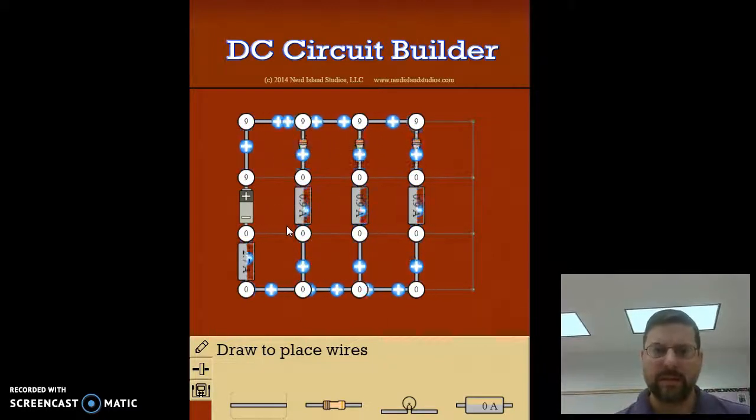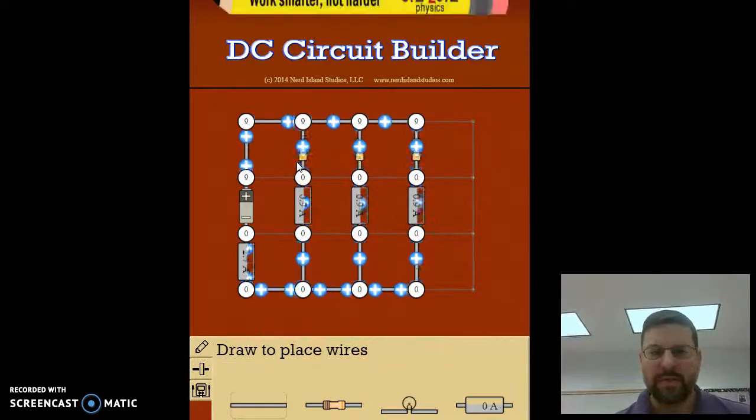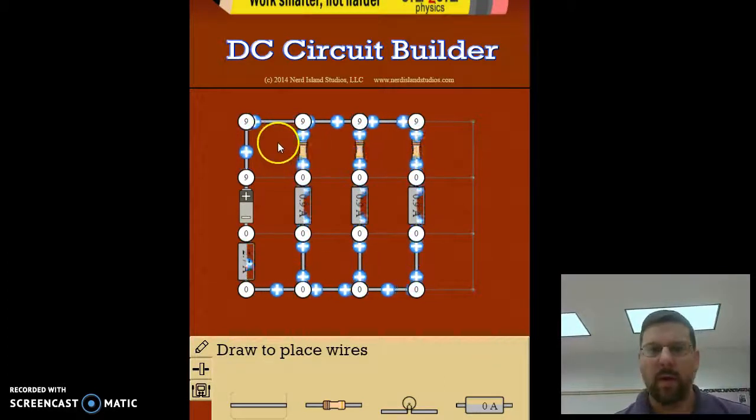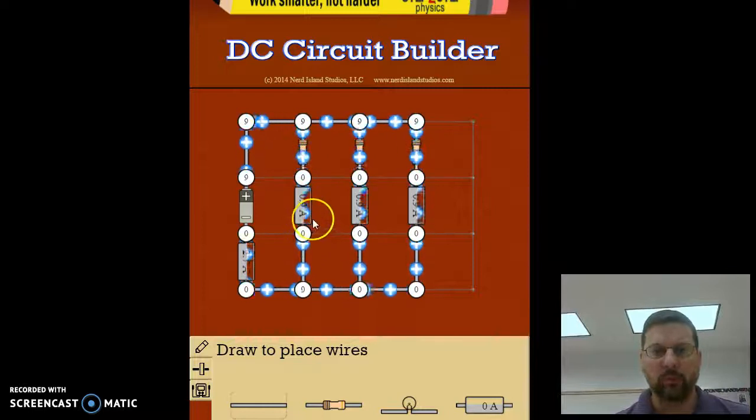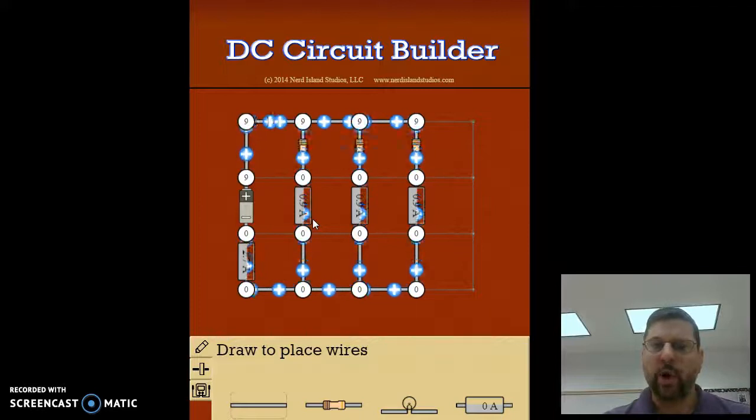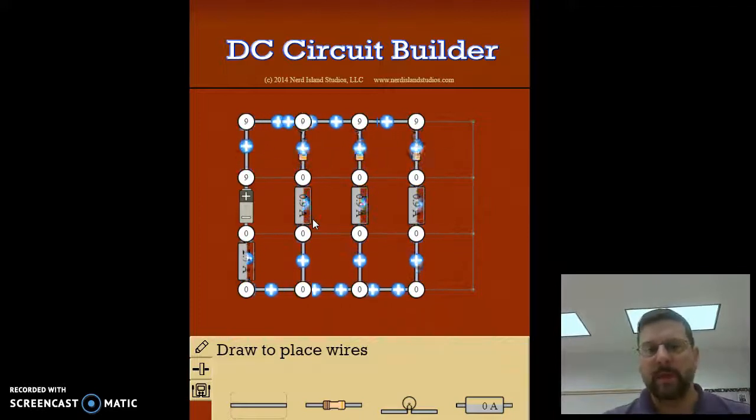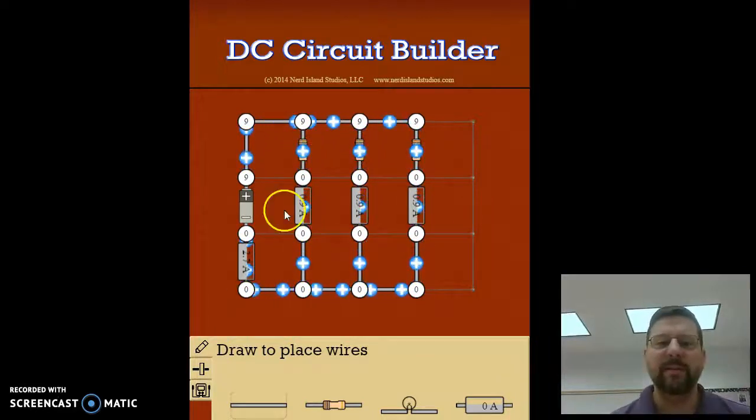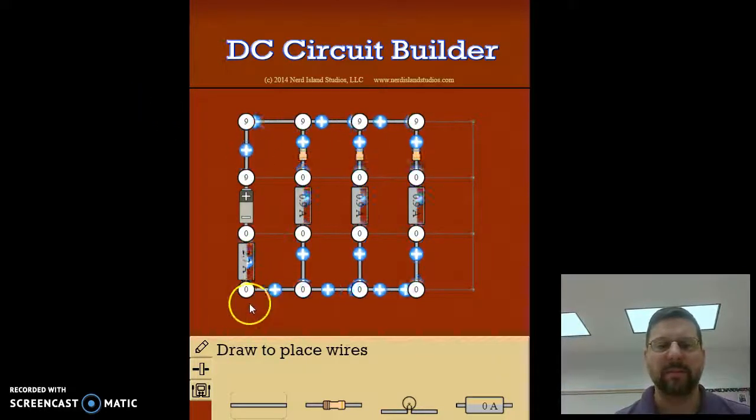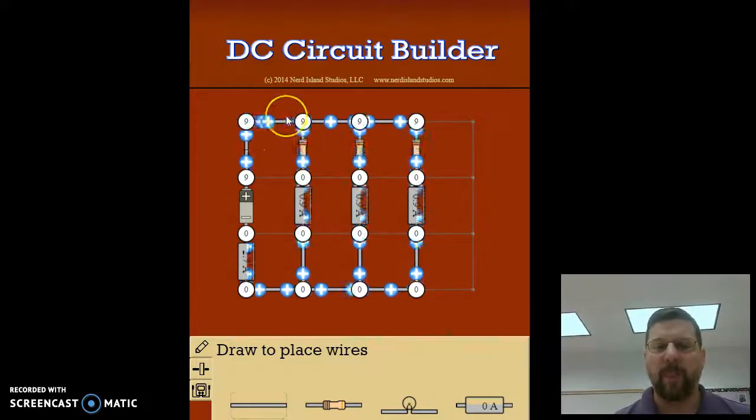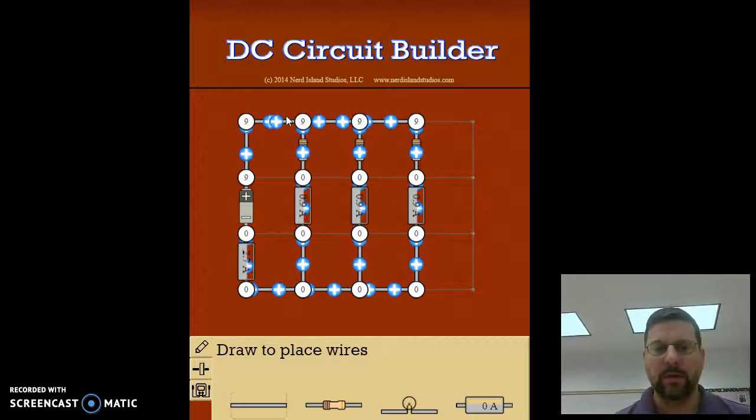So what I want you to look at is what does that mean in terms of the current. First of all, one of the things about circuits is that charge has to be conserved. You can't create charge or you can't destroy charge. So the amount of charge that's leaving the battery has to be the same as the amount of charge coming into the battery.